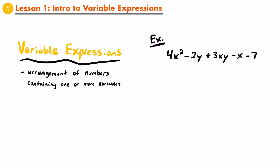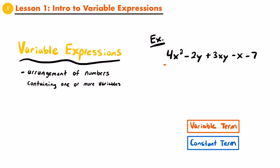In our variable expression right here, we have five terms, but not all of them are variable terms. The variable terms are 4x squared, negative 2y, positive 3xy, and negative x. Those are variable terms because they all include a variable — it doesn't matter what operations are being applied to that variable. All four of these terms have a variable, whether it be x, y, or both, and so they are classified as variable terms.